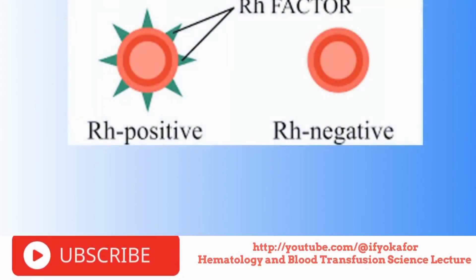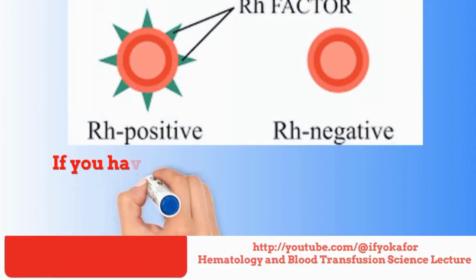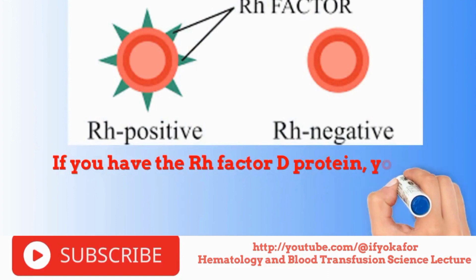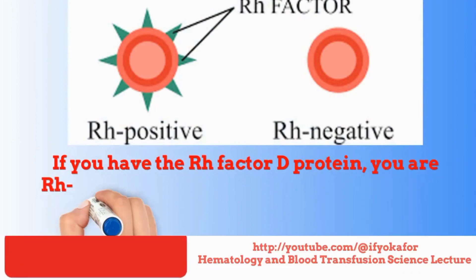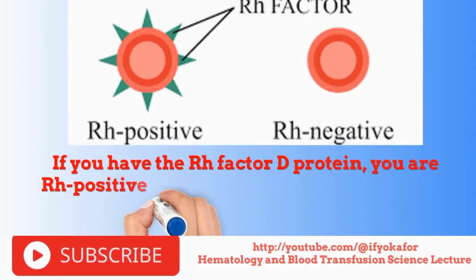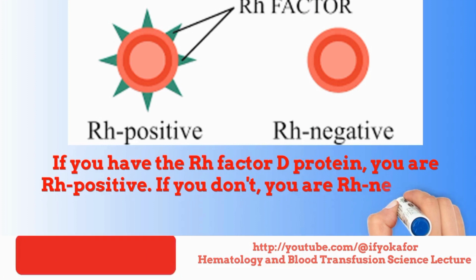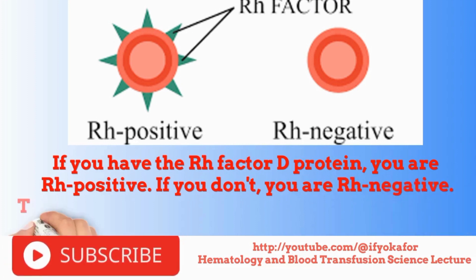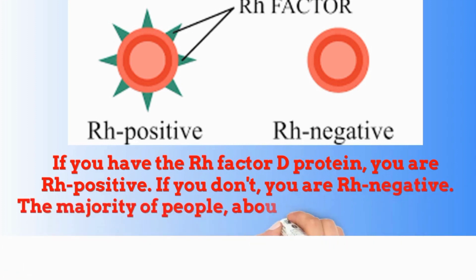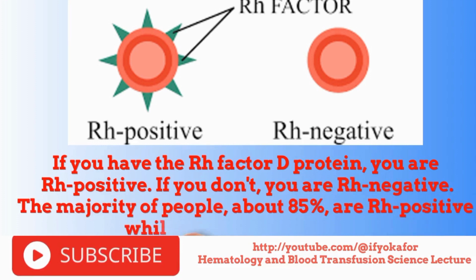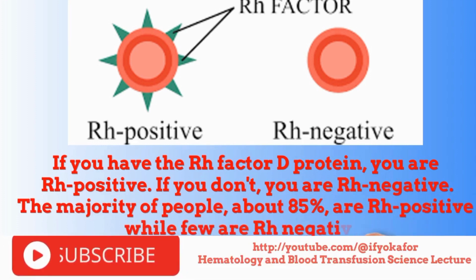If you have the ROH protein, you are ROH positive. If you don't, you are ROH negative. The majority of people, about 85%, are ROH positive, while few are ROH negative.